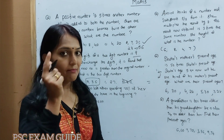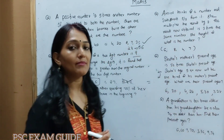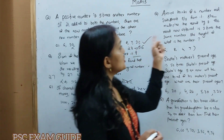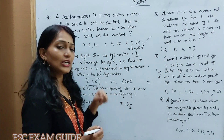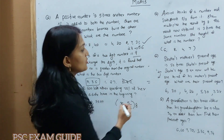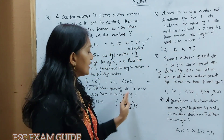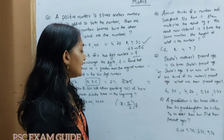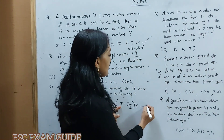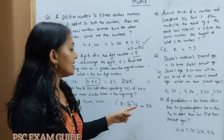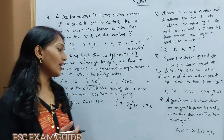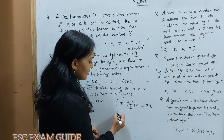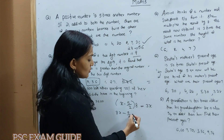Amina thinks of a number. Subtract 5 by 2 from it. She multiplies the result by 8. The result is now obtained. The answer is 3 times the same number. How do we solve this? We solve for x. x equals 8 times x minus 5 over 2, which equals 3x.